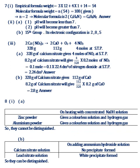Question 7. Part 1, Answer C6H8N2. Part 2: A 1 pH will become less than 7, 2 pH will become greater than 7. B 15th group. Its electronic configuration is 2, 8, 5. Part 3: A Answer 2.24 decimeter cube, B Answer 2.8 grams.